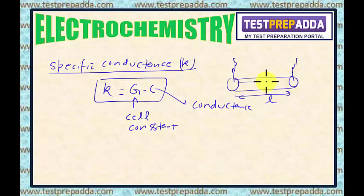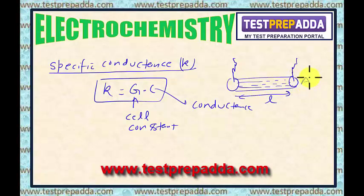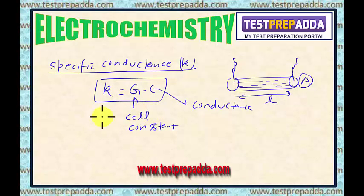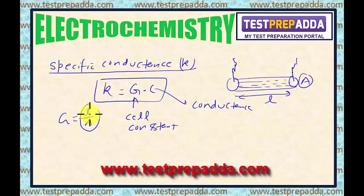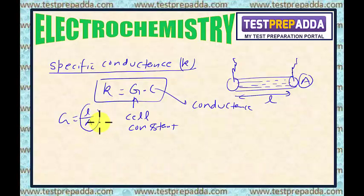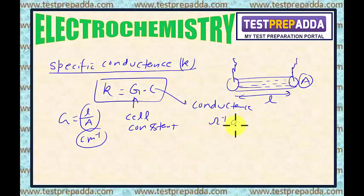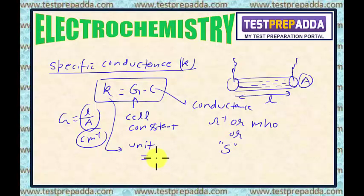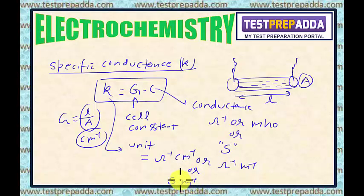This is the electrolytic cell — L is the length where we filled the electrolytic material, and A is the cross-sectional area. The unit of the cell constant is centimeter inverse (L/A). Conductance unit is ohm inverse, or Siemen. So the unit of K will be ohm inverse centimeter inverse, or ohm inverse meter inverse, or Siemen meter inverse.